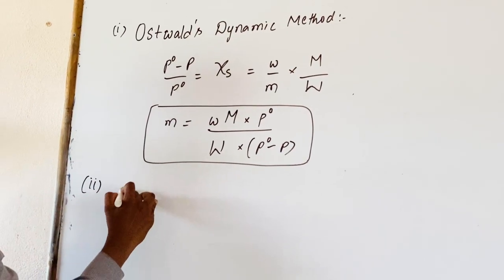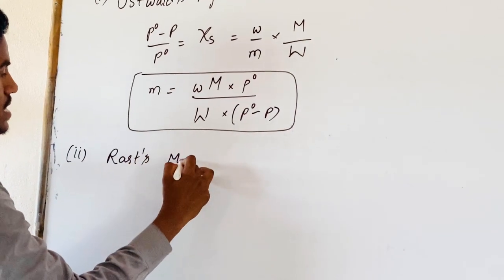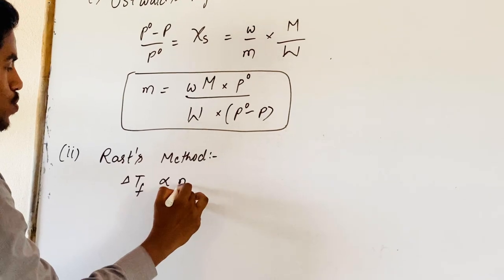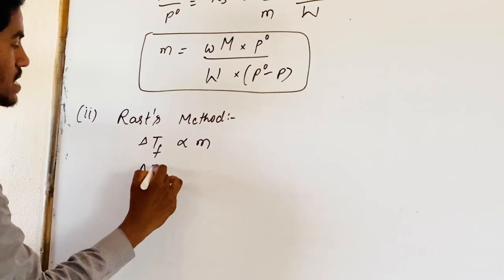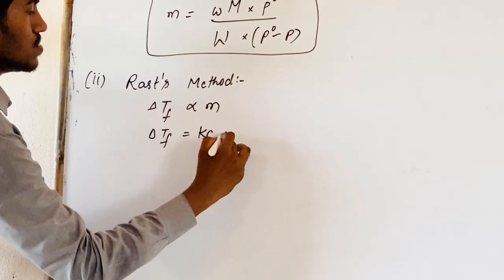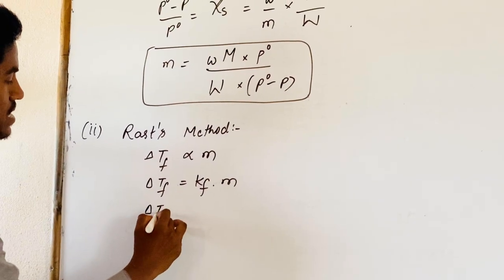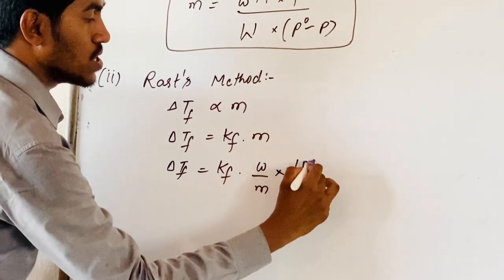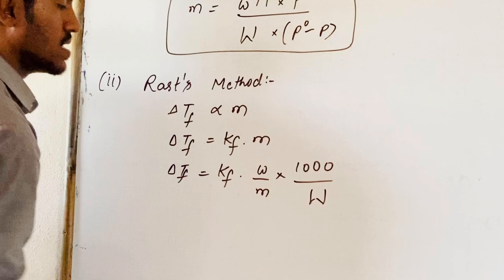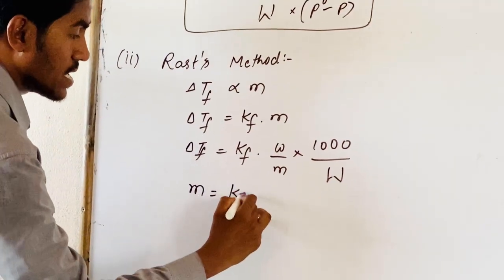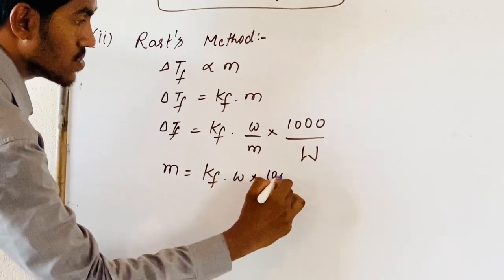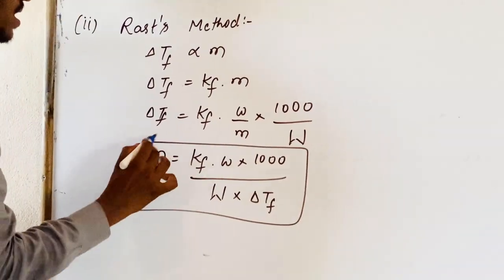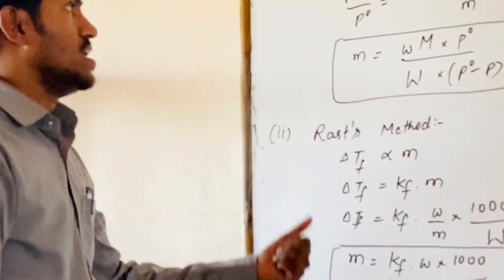Now coming to the second method, that is the Rast Method. In the Rast Method, depression of freezing point is directly proportional to molality. Delta Tf equals Kf into m. From this, delta Tf equals Kf into (weight of solute by molecular weight of solute) into (1000 by weight of solvent in grams). Therefore, molecular weight of solute equals Kf times W times 1000, divided by capital W times delta Tf. By this equation, you can calculate the molecular mass of the unknown solute.